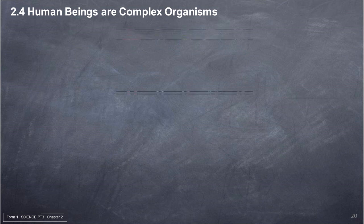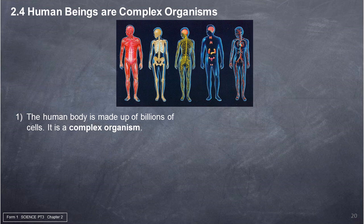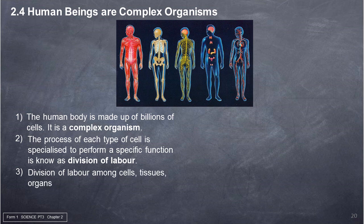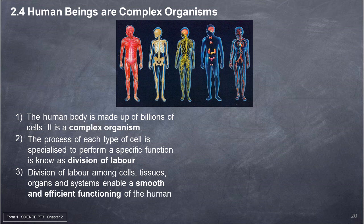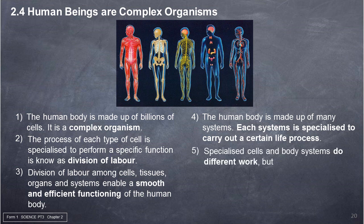2.4 The human body is made up of billions of cells — it is a complex organism. The process of each type of cell being specialized to perform a specific function is known as division of labor. Division of labor among cells, tissues, organs, and systems enables smooth and efficient functioning of the human body. The human body is made up of many systems, each specialized to carry out a certain life process. Specialized cells and body systems do different work, but all work together to ensure that the human body functions efficiently.